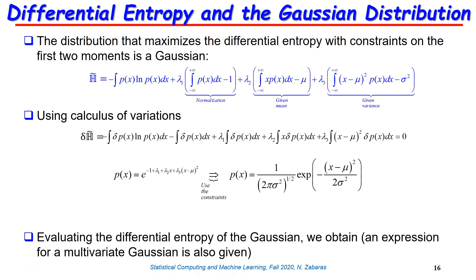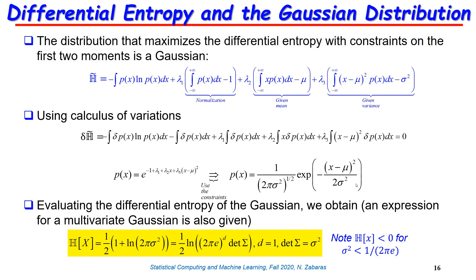The entropy of a univariate Gaussian with mean μ and variance σ² is H = ½ log(2πeσ²). For a d-dimensional multivariate Gaussian with covariance Σ, the entropy is H = ½ log((2πe)^d · det(Σ)). Note that for the univariate case, if the variance is less than 1/(2πe), the entropy is negative.